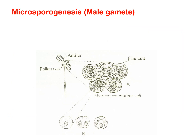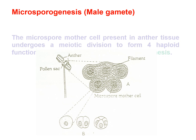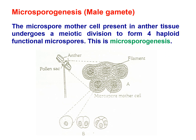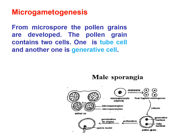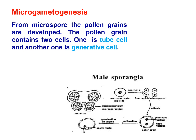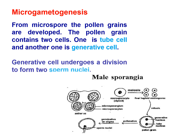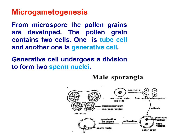Microsporogenesis: The microspore mother cell present in anther tissue undergoes meiotic division to form four haploid functional microspores — this is microsporogenesis. Microgametogenesis: From the microspore, pollen grains are developed. The pollen grain contains two cells: the tube cell and the generative cell. The generative cell undergoes division to form two sperm nuclei.